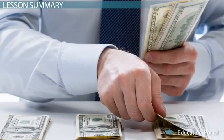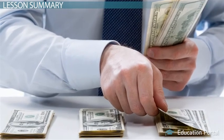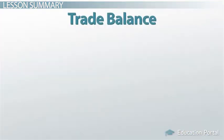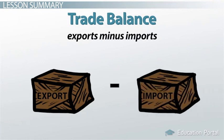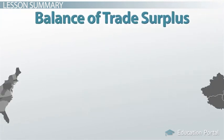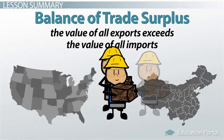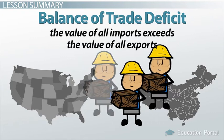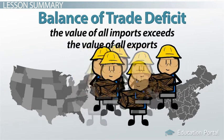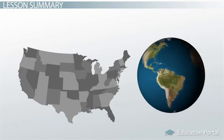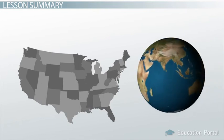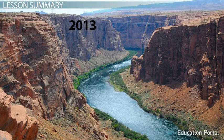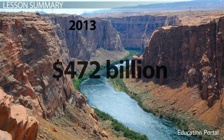In summary, much like we monitor our own cash and financial position, so do countries with their trade balance. A country's trade balance is the calculation of its exports minus its imports. A balance of trade surplus happens when the value of all exports exceeds the value of all imports. A balance of trade deficit is when the value of all imports exceeds the value of all exports. The US has the world's largest trade deficit and has run a trade deficit since 1975. In 2013, the deficit in goods and services was more than $472 billion.